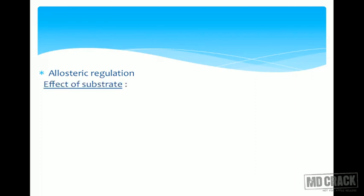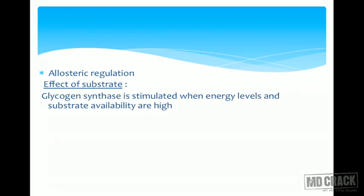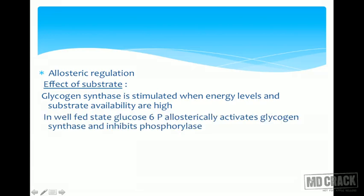Glycogen synthase is stimulated when energy levels and substrate availability are high. High energy levels are indicated by high ATP, and high substrate availability means high glucose levels. In the well-fed state, glucose-6-phosphate allosterically activates glycogen synthase and inhibits glycogen phosphorylase.